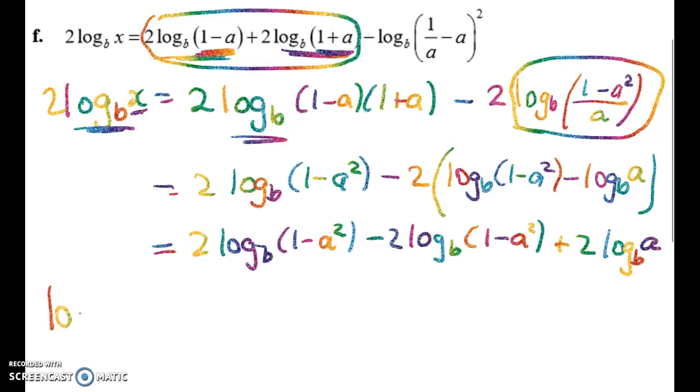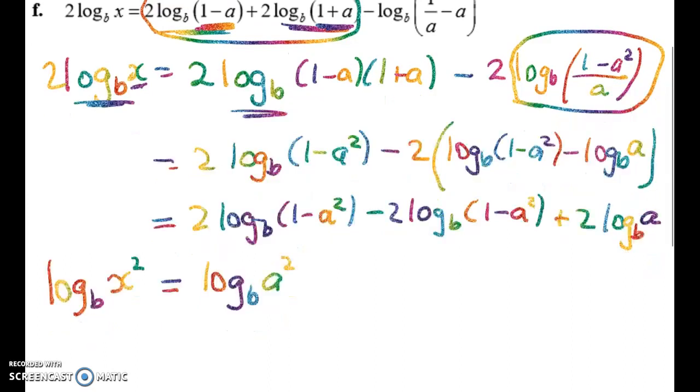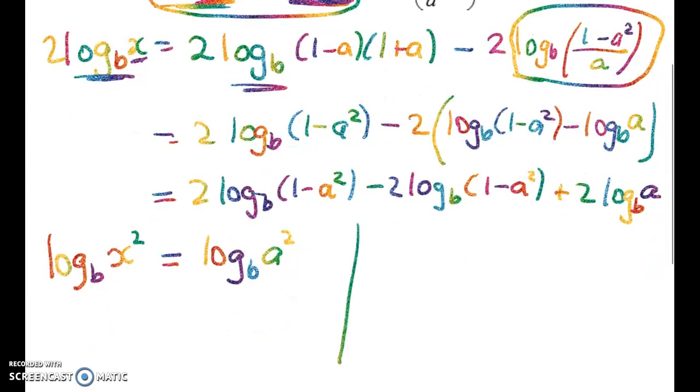On the left hand side, I've got the log to base b of x squared is equal to the log to base b of a squared. Or, I could have just left it, so I didn't need to do that step of putting the squares back. I've got 2 log to base b of x is equal to 2 log to base b of a.